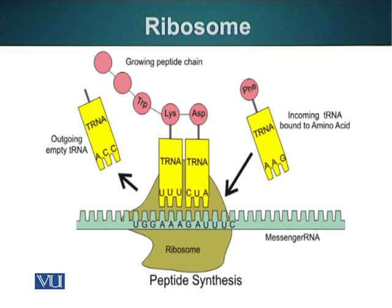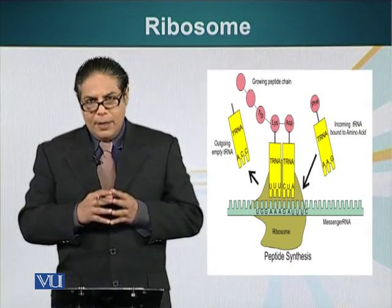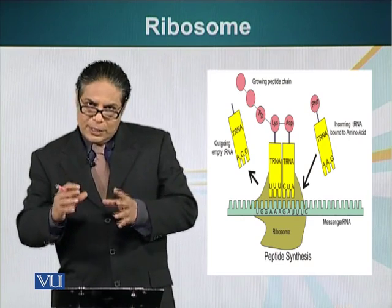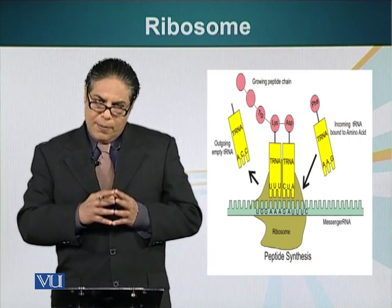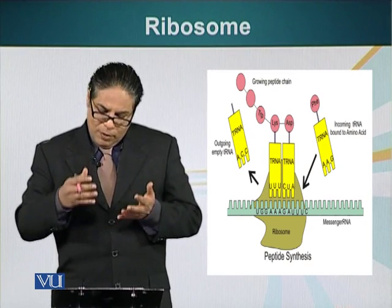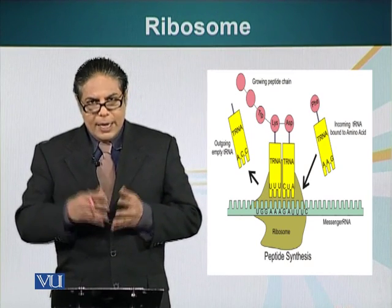When the large subunit assembles on the complex formed by the union of the small ribosomal subunit and the messenger RNA, another type of RNA comes and brings amino acids attached to it. These types of RNAs are called transfer RNAs.